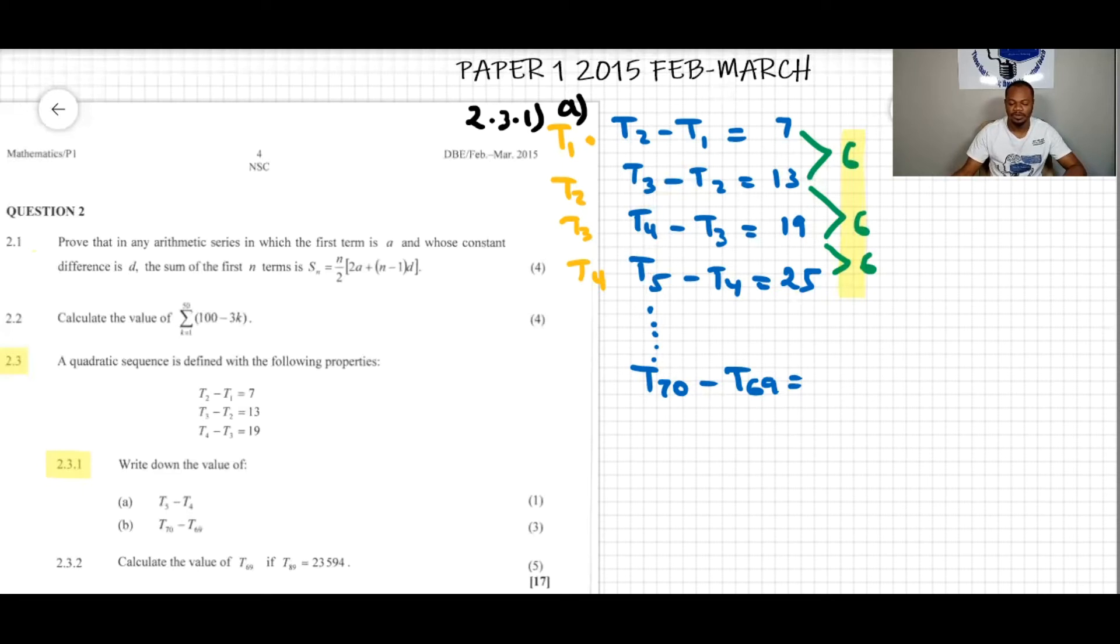We need to determine what term this is. We know that this one is term 1, that's term 2, term 3, term 4. I can see that this is term 69, because it is 70 minus 69. This was term 1 because we have T1, and the following is term 2 with T2, T3, T4, so that must be T69.